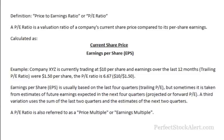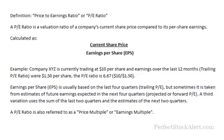This video will be going over the PE ratio and giving you a really good example of how to use it. The definition of a PE ratio, or price-to-earnings ratio, is that it's a valuation ratio of a company's current share price compared to its per-share earnings. It's calculated as the current share price divided by the earnings per share.